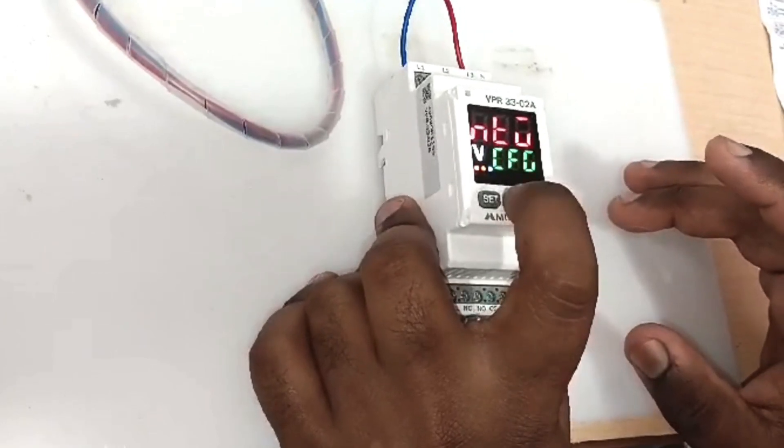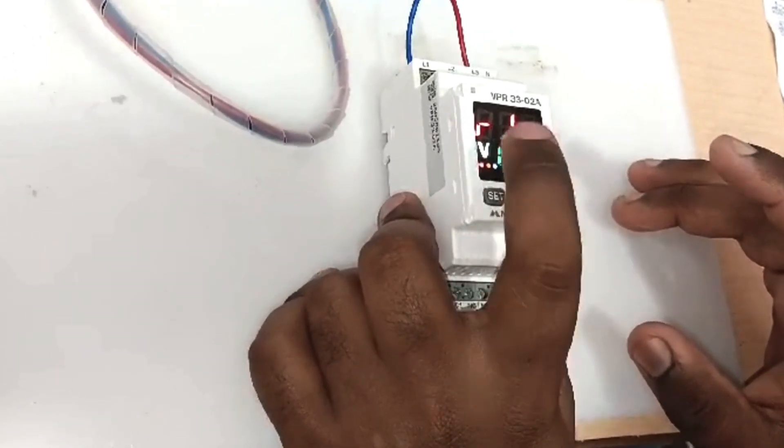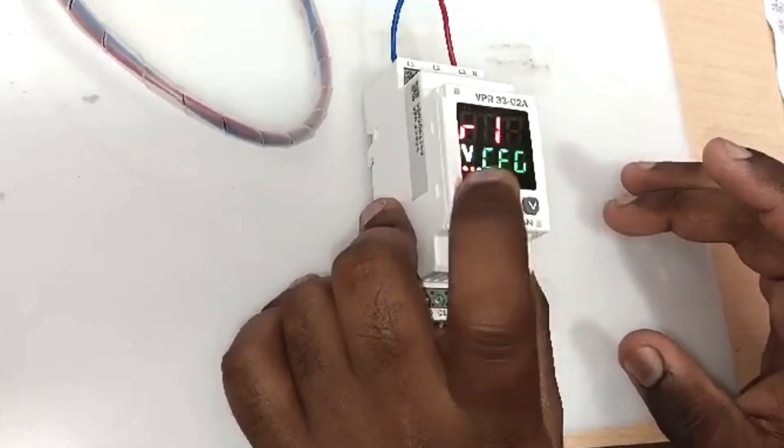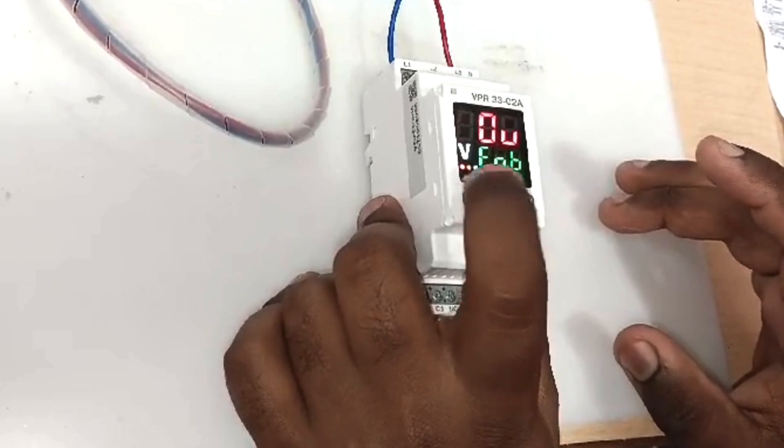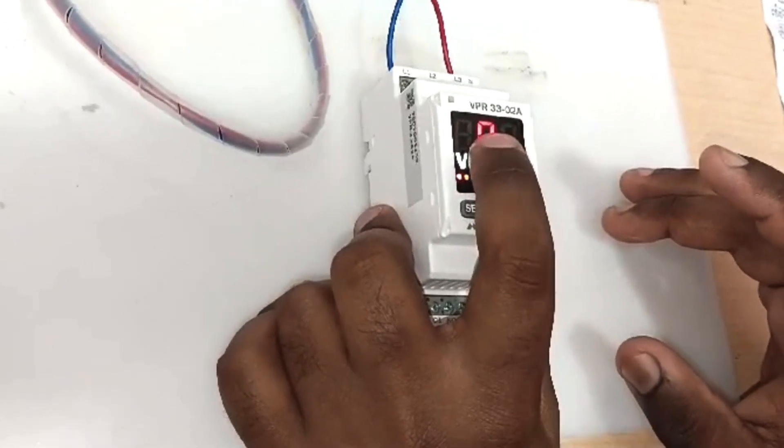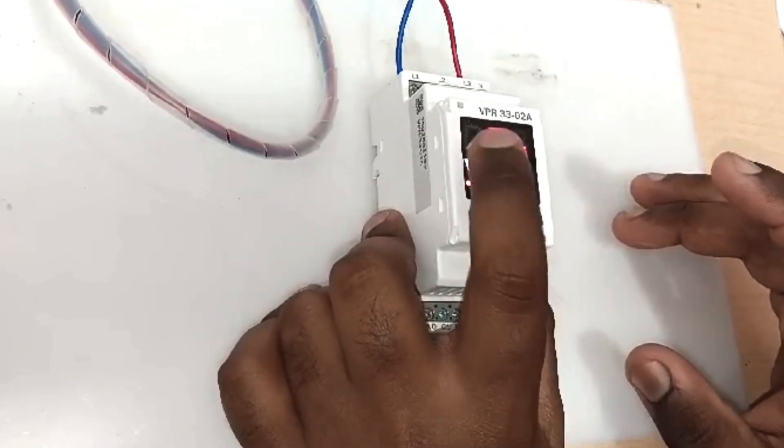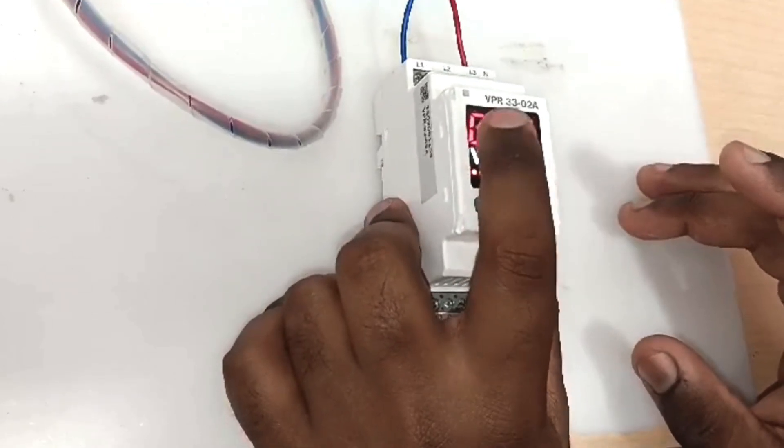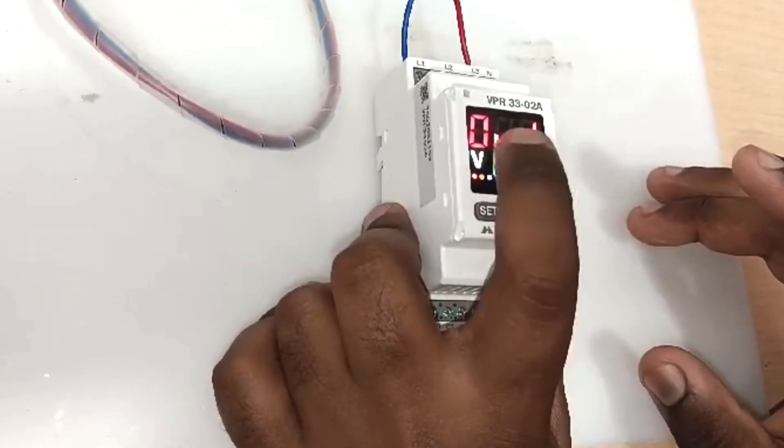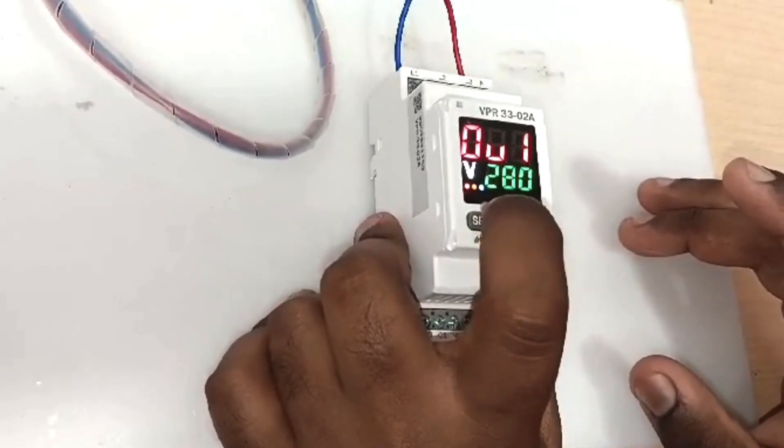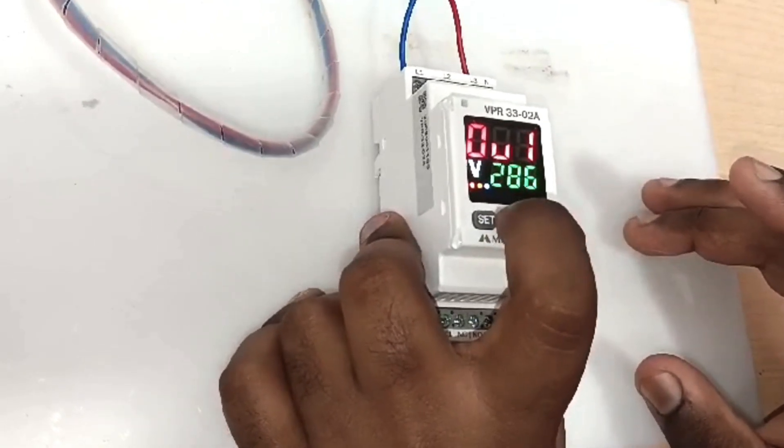Then press set button and next you get voltage configuration. You have to use up arrow and go to voltage relay one and press set button. This is over voltage. Now we have kept over voltage as enabled. Here you can configure the value of over voltage. Let's keep it at 240V. Now I have kept it to 240.